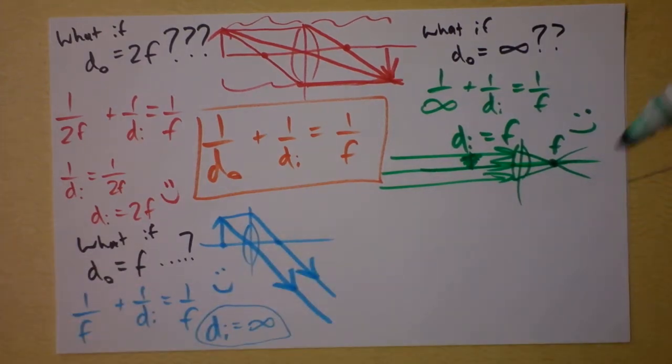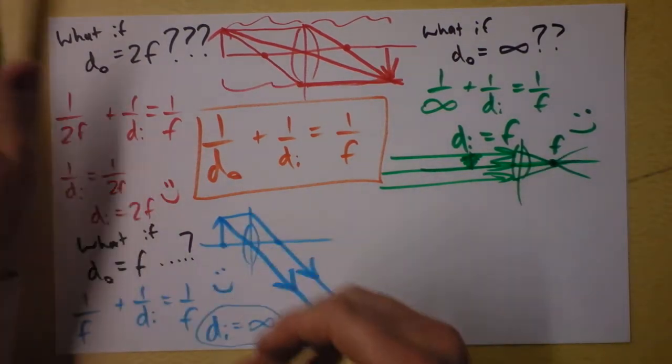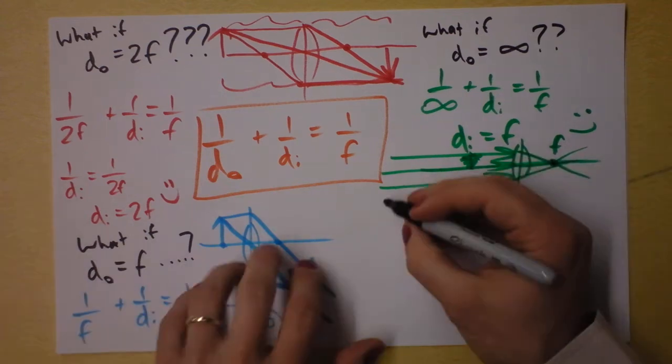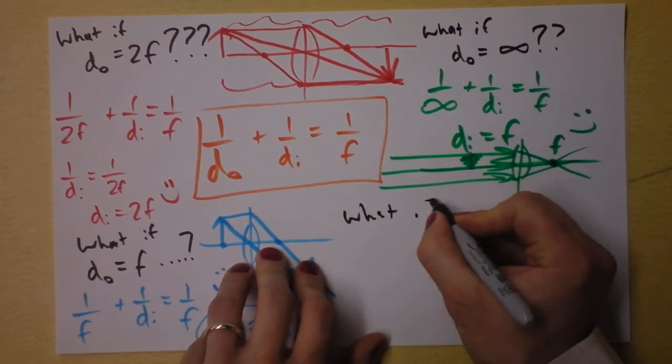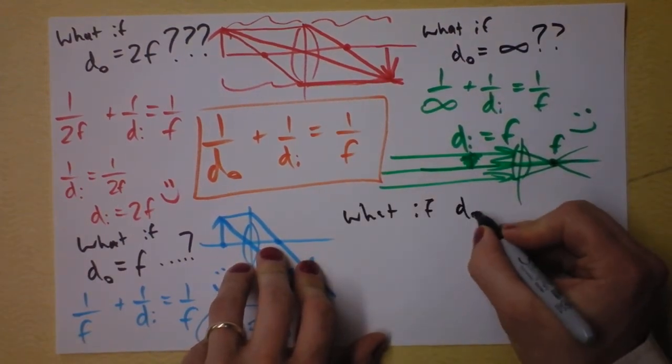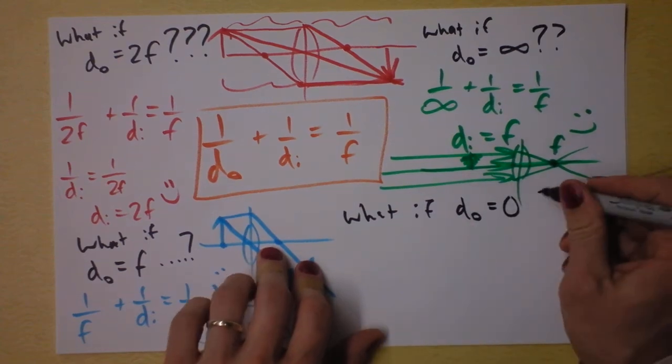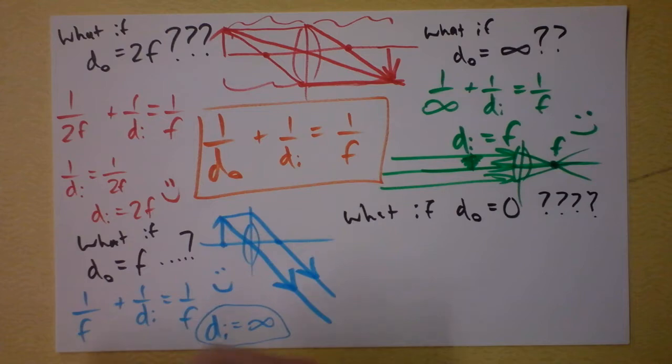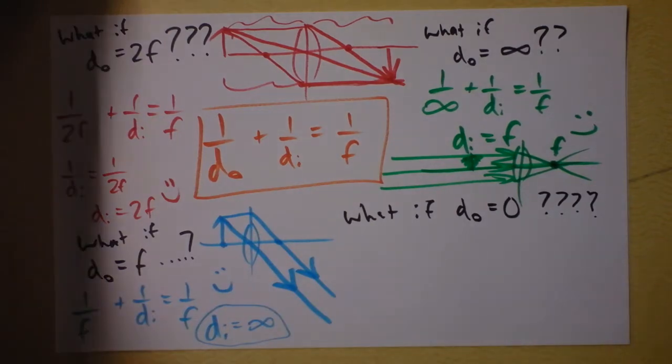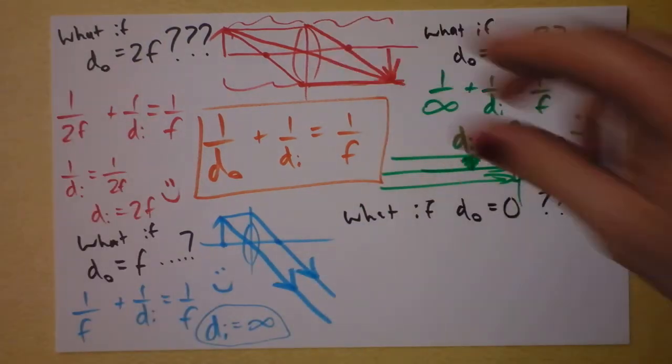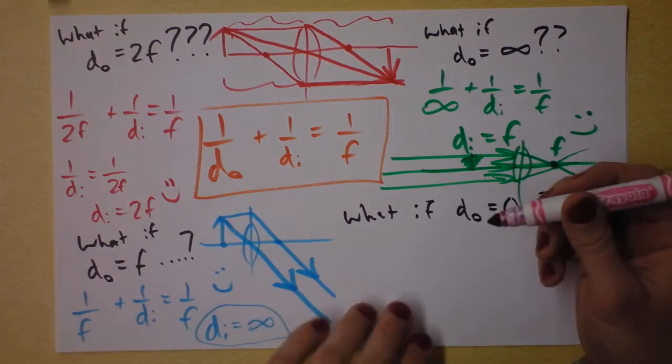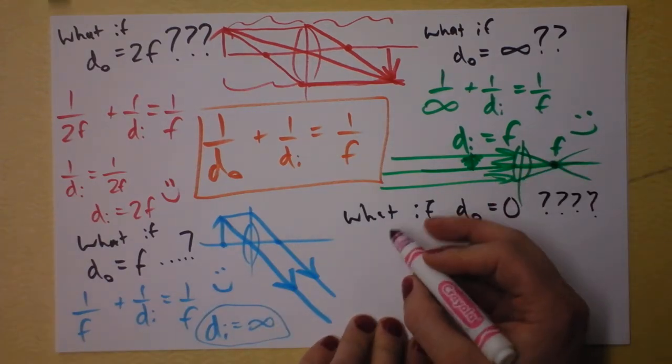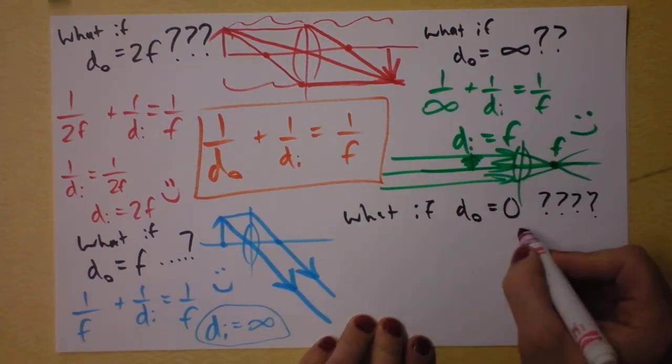Let's do one final case and this is maybe going to bother you the most. I really do hope to bother you a little bit. What if the distance of the object is at zero? Wait a second. Do you mean I get all up in that lens's face? We could go pink.